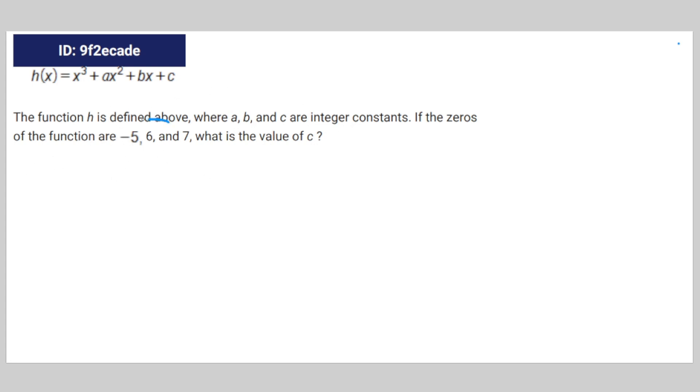So all that is really telling us is that you can define h of x like this as x plus 5 for negative 5, x minus 6 for positive 6, and x minus 7.